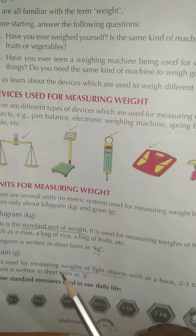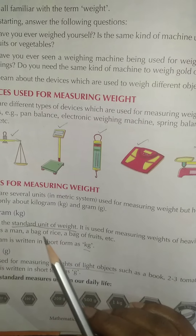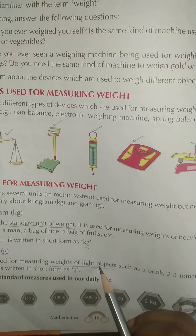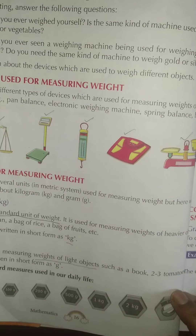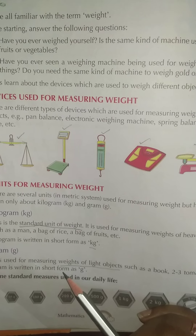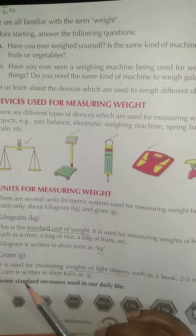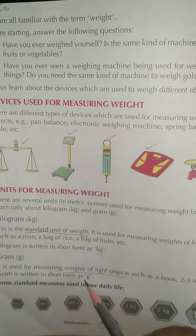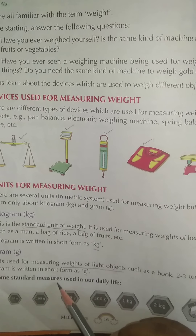Gram is used for measuring weights of light objects, such as a book, two or three tomatoes, or a pencil. Gram is written in short form as g. Kilogram is written as kg.